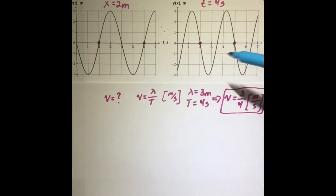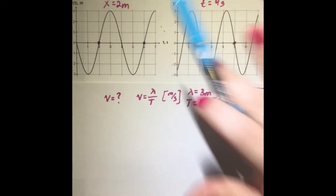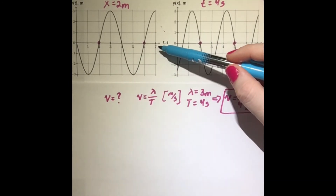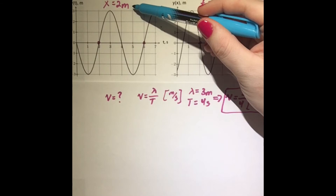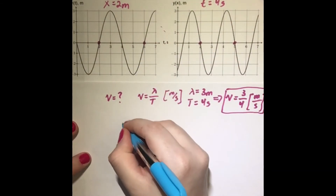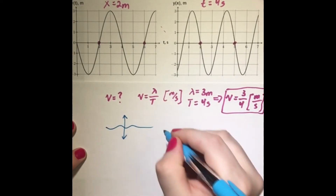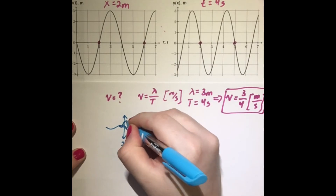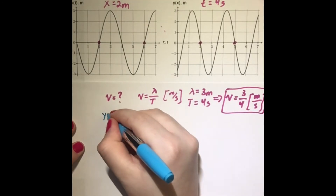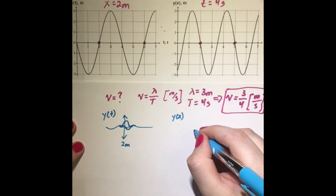A rubber ducky can float up and down in the wave, or it can move along the wave. Imagine a rubber ducky sitting in a pool where we have waves — imagine jumping in and making the rubber ducky go up and down. Looking at the y(t) graph, we are watching a specific point along the wave, so we can imagine the rubber ducky moving up and down as a function of time as the wave travels through that point.